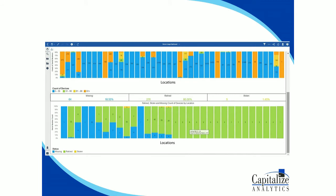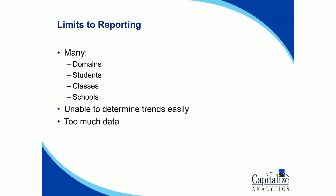These slides are available as an attachment or link if you want to view them later — I know we're going through the reports fairly quickly. That was really the crux of the project. But there are limits to reporting: there are virtually an infinite number of domains that students can click on, a large number of students across the entire school district, a large number of classes, a fair number of schools. It's hard to determine trends based just on these reports. The tactical reports are very useful for making sure machines are where they need to be and understanding how they're being used, but it's really too much data to look at on a report.